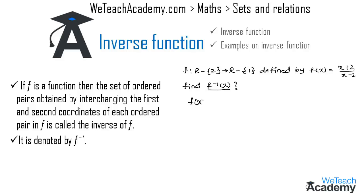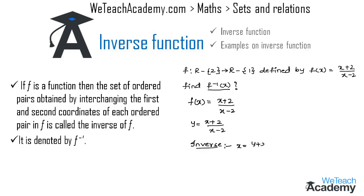The given function is f(x) = (x + 2) / (x minus 2). Let y = (x + 2) / (x minus 2). The inverse is found by interchanging x and y, giving x = (y + 2) / (y minus 2).